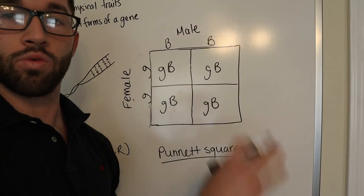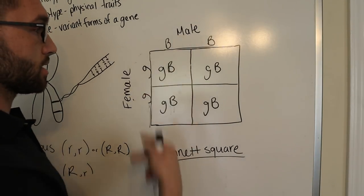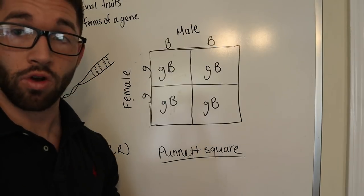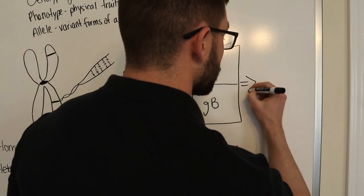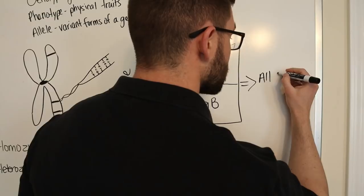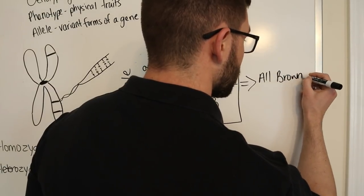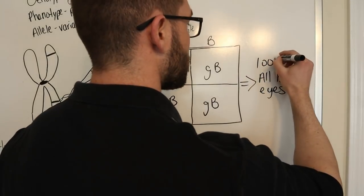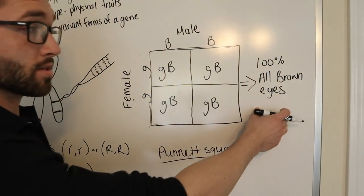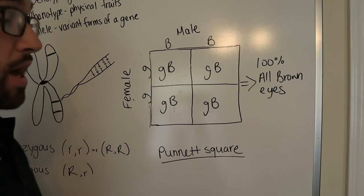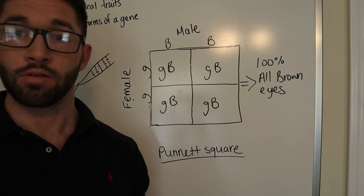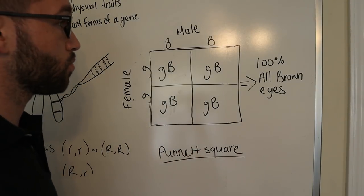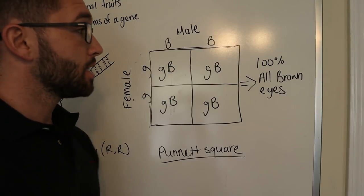Say we didn't know the genotypes, say we didn't know these letters, but when we crossed them, the offspring came out with all brown eyes. Based on this cross, a test cross, you could say, we know that brown eyes is the dominant allele in this cross.